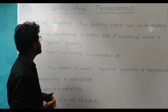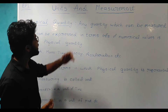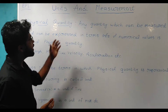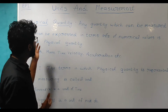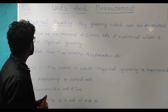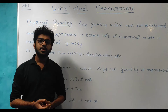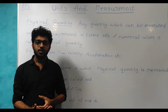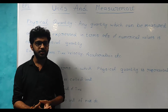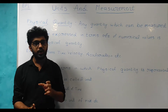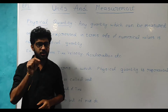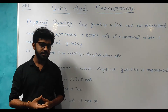Let us start now and begin with physical quantity. We can define physical quantity like this: any quantity which can be measured and expressed in terms of numerical values is called a physical quantity. That means quantities which can be measured and, after measuring, can be expressed in numerical values — such quantities are called physical quantities.